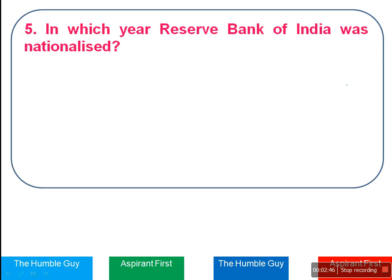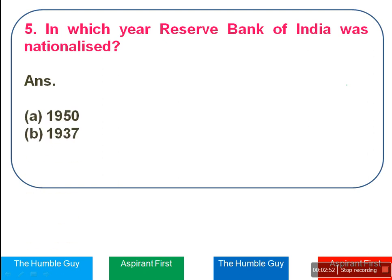In which year was Reserve Bank of India nationalized? The options are 1950, 1937, 1938, or 1949. The right answer is Option D — 1949.